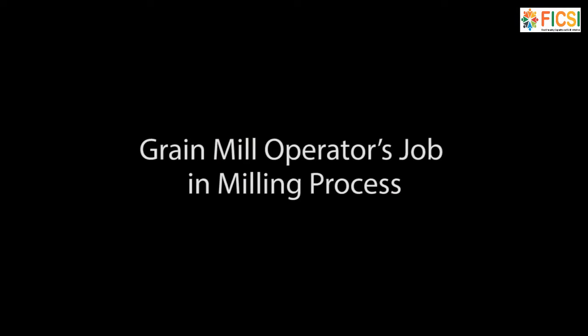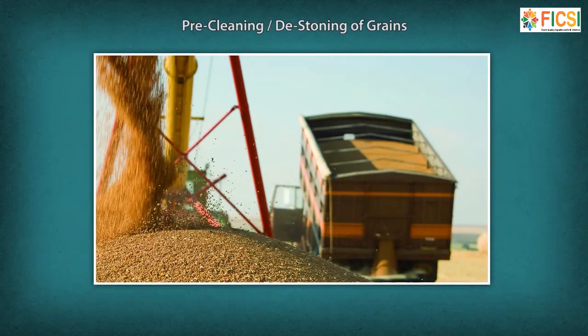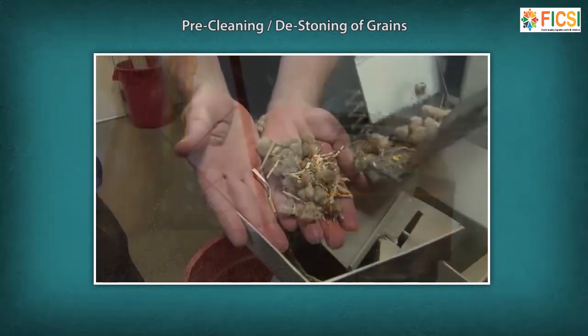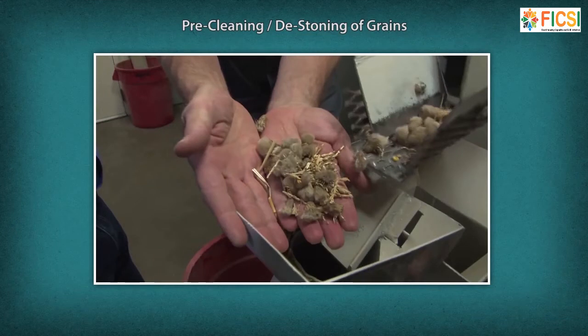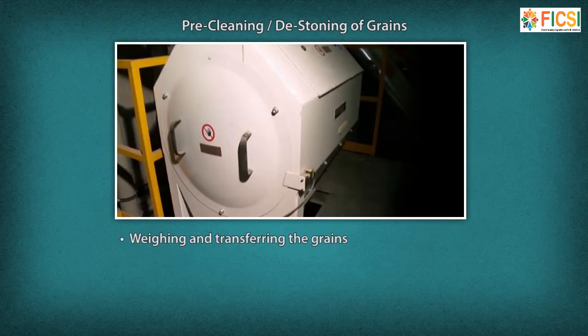Grain Mill Operator's Job in the Milling Process: A grain mill operator is involved in the following stages. Pre-cleaning and de-stoning of grain: When grain comes into the mill it contains foreign material such as straw, weed, seeds, soil and other inert material. If this is not removed prior to hulling, the efficiency of the huller and the milling recovery are reduced. The operator weighs the grains and transfers them to the Rotary Screen Cleaner Graders for cleaning.